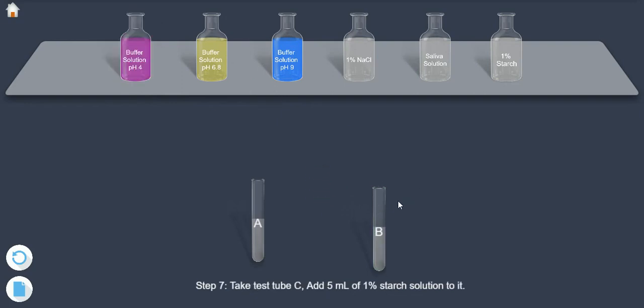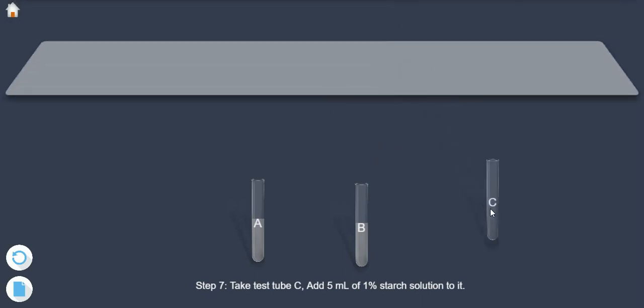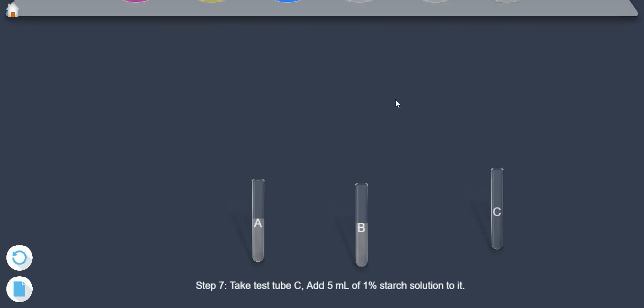Step 7: Take test tube C. Add 5 ml of 1% starch solution to it.